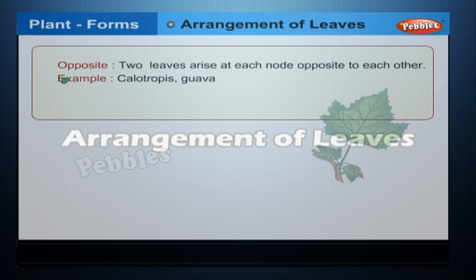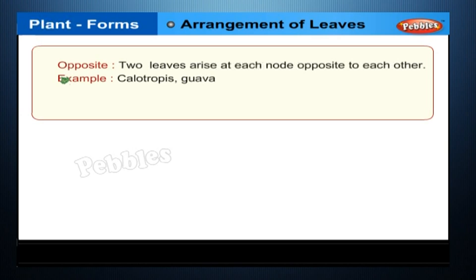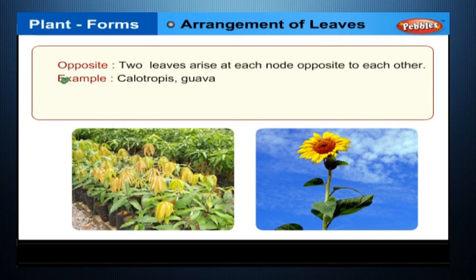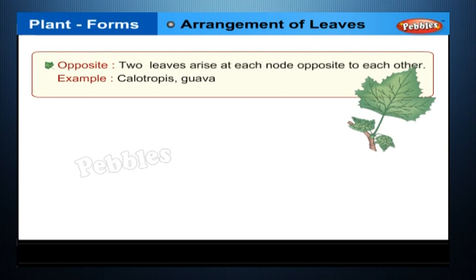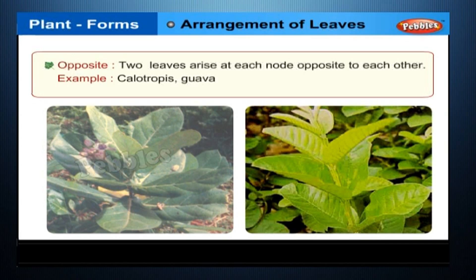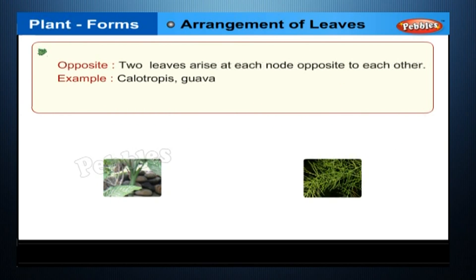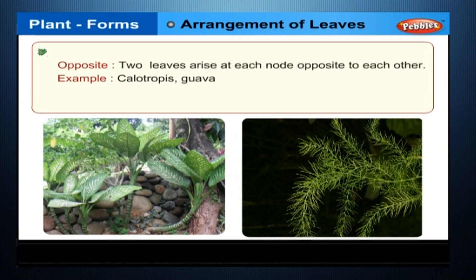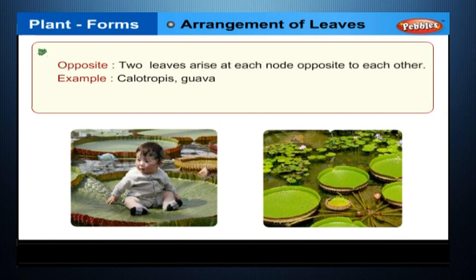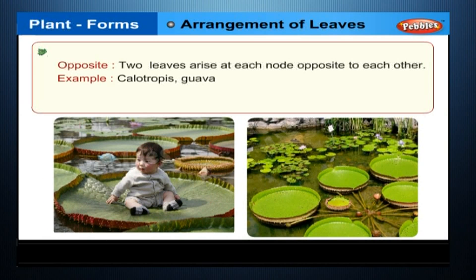Three types of leaf arrangement are commonly noticed in plants. In alternate arrangement, a single leaf arises at each node on the opposite side of the previous leaf; examples include mango and sunflower. In opposite arrangement, two leaves arise at each node opposite to each other; examples include calotropis and guava. In whorled arrangement, more than two leaves arise at each node arranged in a whorl or circle; examples include oleander and asparagus. The largest leaf is that of the giant water lily Victoria regia, which is more than one meter in diameter.